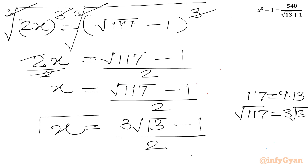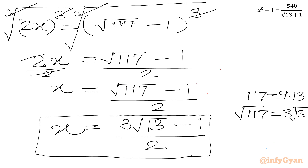So x = (3√13 - 1) / 2 is our final answer for the real value of x. I hope friends you will like this video. Thank you so very much for watching. Till next video, goodbye.